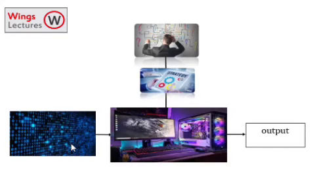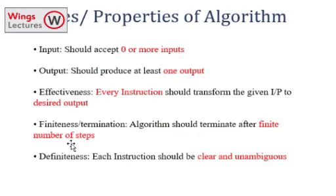Let me explain the properties of algorithm. The first property is input. An algorithm should accept zero or more inputs.